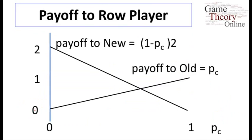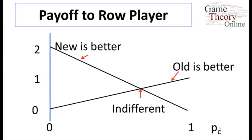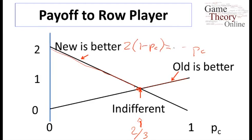We can graph these out: the payoff to old is just pc, which increases in pc, and the payoff to new is two times one minus pc, which decreases in pc. The new technology is better if the probability that the column player plays old is less than two-thirds, old is better if that probability is bigger than two-thirds, and they're exactly indifferent at two-thirds. Setting pc equal to two times one minus pc gives the indifference point of two-thirds.